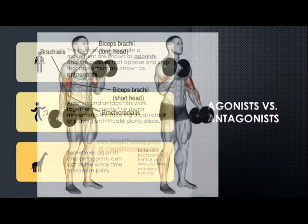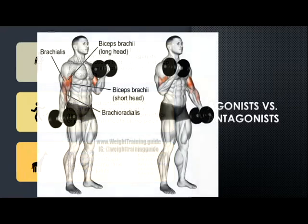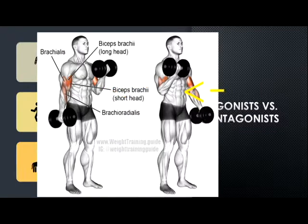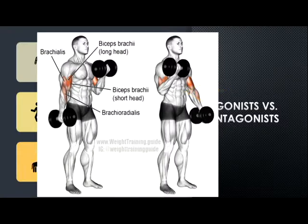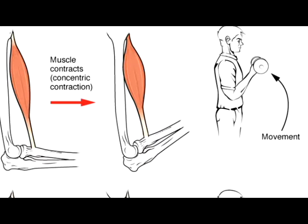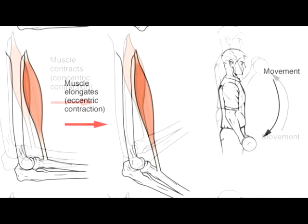To use the same scenario: if you do a bicep curl, your biceps brachii is shortening — that's the concentric phase. When you go back down, you're elongating your biceps — that's an eccentric contraction. And if you just hold the weight in front of you at a 90-degree angle, that's an isometric contraction. These specific terms aren't required for the Brain Bee, but they're really useful for understanding how muscles affect your skeletal system.